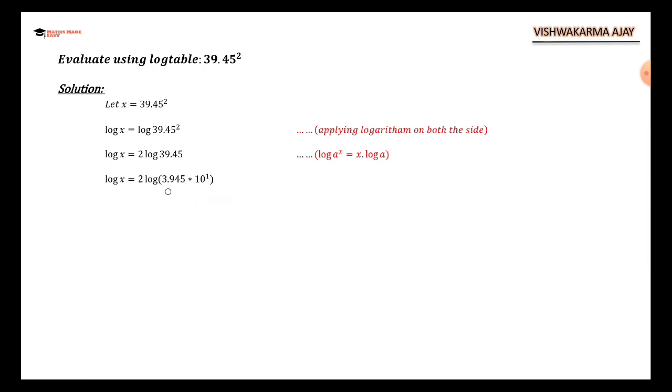So now applying log on 3.945 times 10 raised to 1, taking log inside will give me these two parts. You will be looking in the log table: 39 column number 4 and mean difference 5, so we have 0.5960 plus 1 since log 10 equals 1. Log x equals 2 times of 0.5960 plus 1. Log x equals 2 times of 1.596, since we are going to add 1 here. So we have log x equals 3.192.